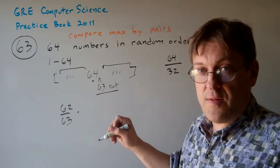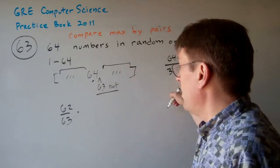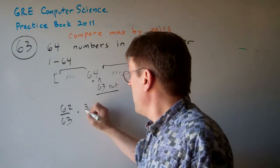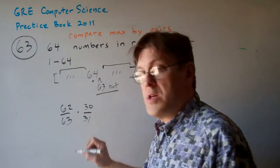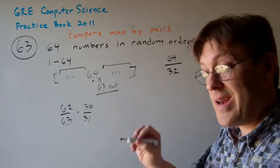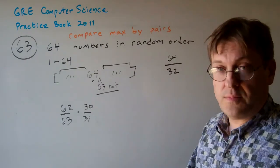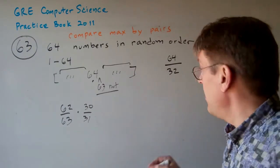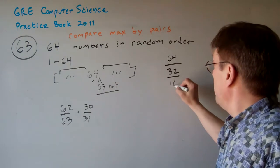Well, we don't want it to be next to 64, so there's going to be 30 out of 31 chances that it's not next to 64. I hope you're following me on this. Then it's going to split in half again.